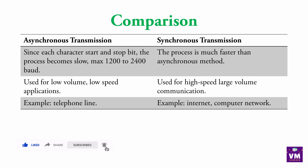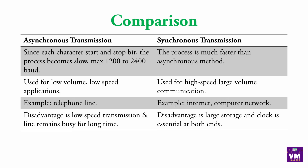Synchronous के examples हैं: internet और computer network। Asynchronous के example हैं: telephone line। Disadvantage of asynchronous is low speed transmission and the line remains busy for a long time. Disadvantage of synchronous is large storage requirement and clock is essential at both ends। इस तरह से asynchronous transmission और synchronous transmission work करता है।